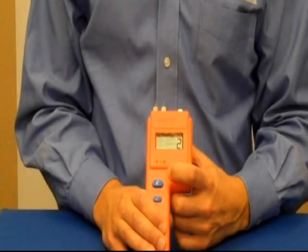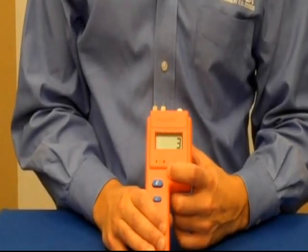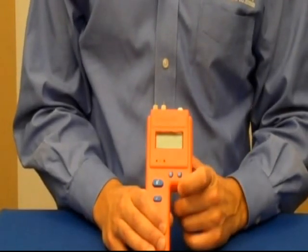To access those scales, you simply press the asterisk button here and just choose among one, two, or three. One being the wood scale, two being the reference scale, and three being the drywall scale.